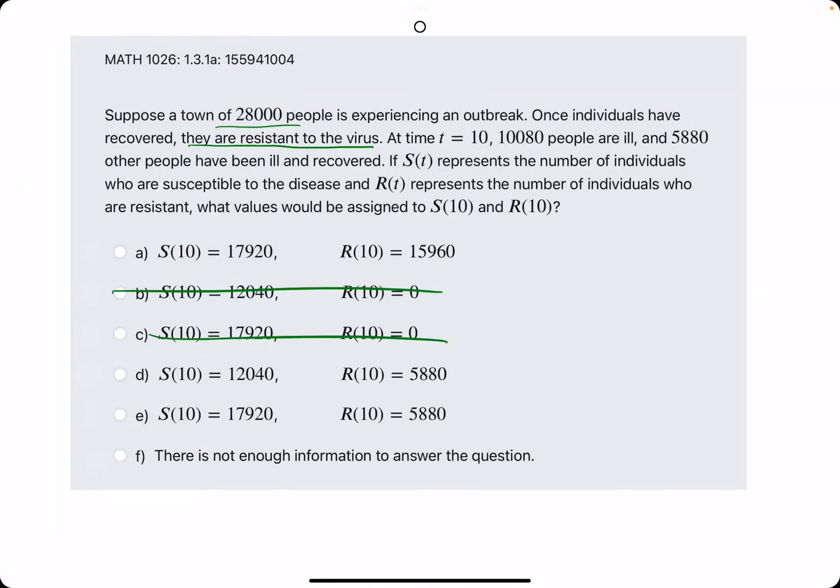Let's keep going. At time t = 10, 10,080 people are ill and 5,880 other people have been ill and recovered. S is the number of individuals who are susceptible, and R is the number of individuals who are resistant.